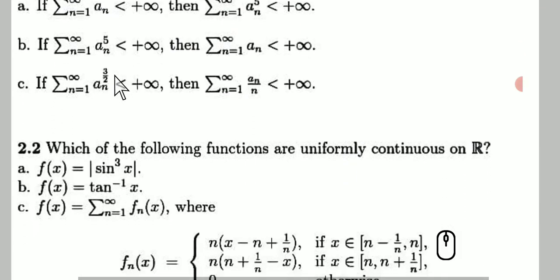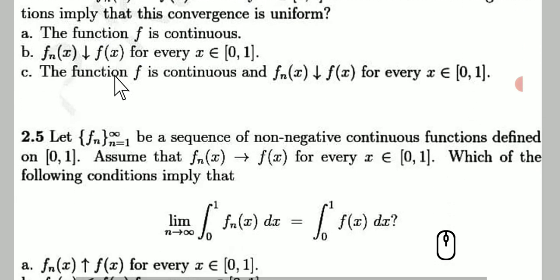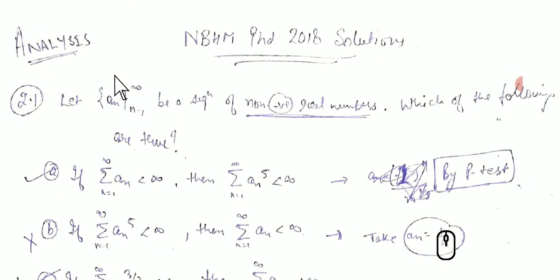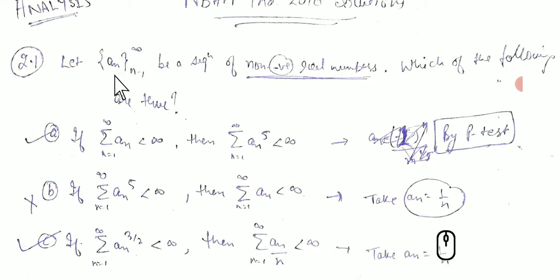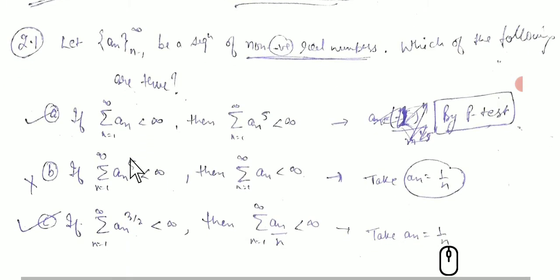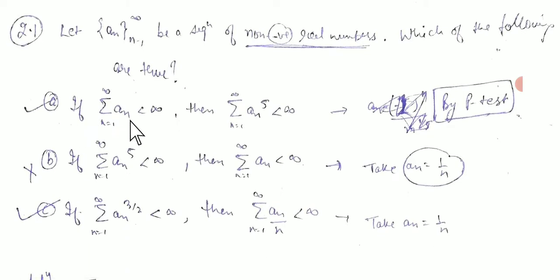Our first question is: let aₙ be a sequence of non-negative real numbers. Which of the following are true? The first option is: if the summation of aₙ is convergent — that is, the series of aₙ is less than infinity — then aₙ raised to the power 5 will also be convergent.